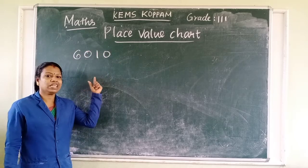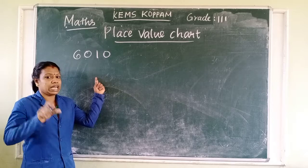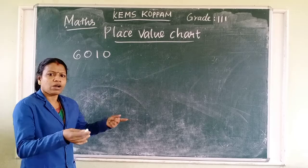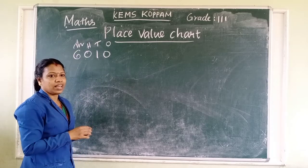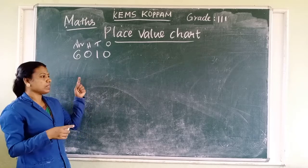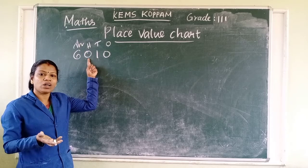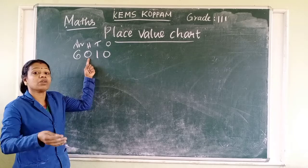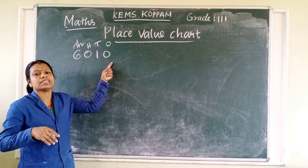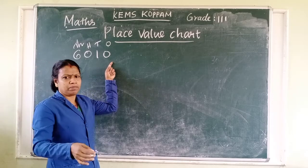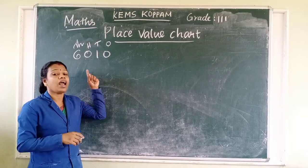Read this number. How will you read this number? If you have any confusion for reading this number, just note down the place name just above the number. You can note down the place names. So, this is ones, tens, hundreds and thousands. Then we can easily read the number name. The number is six thousand. Then, what about the next number? It is zero. The hundred place is zero, so no need of reading that number. Don't read it as zero hundred — just leave that place. So, here the number is six thousand and ten.